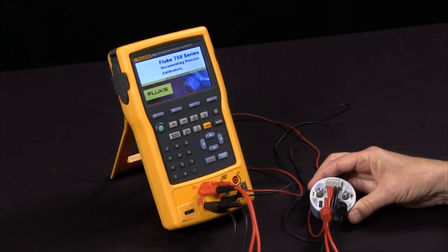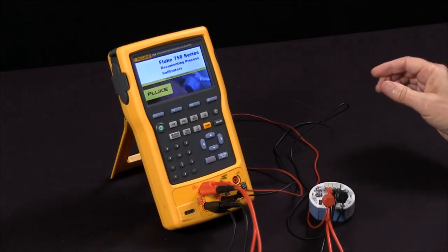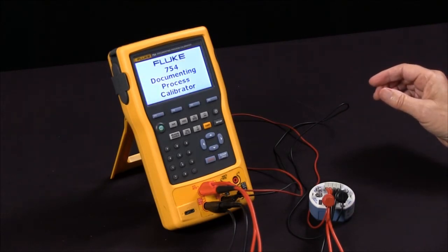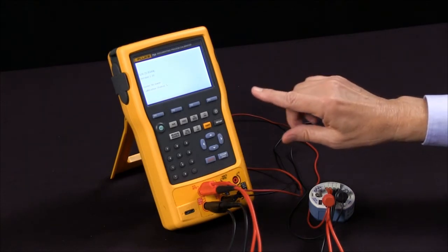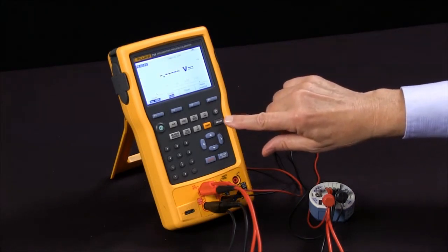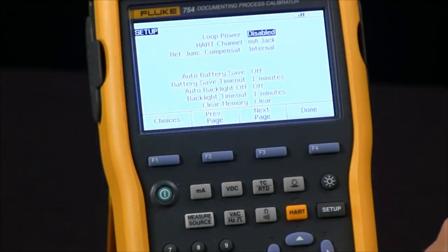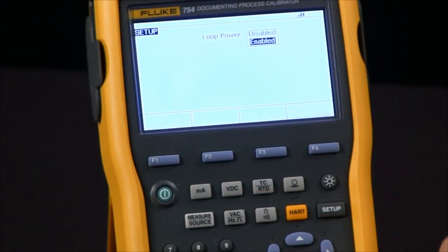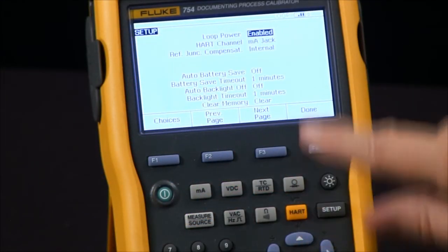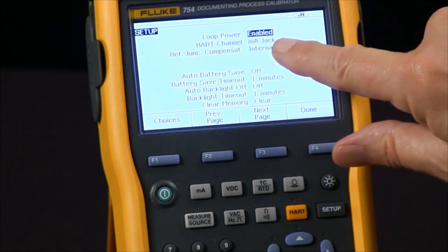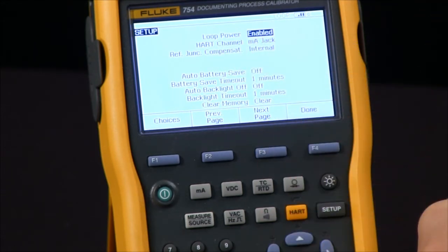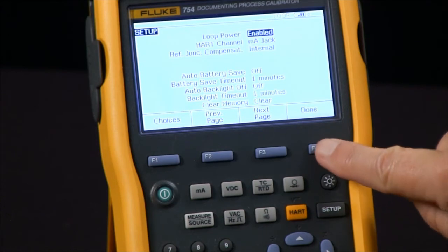Right now it's disabled, so I'm going to enable the 24 volt loop power. You'll also notice the HART channel communication is set up via the milliamp jack, so that'll work fine for our setup. I'm done there. If I go to milliamps measure, it's measuring 21.8 milliamps.